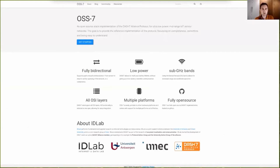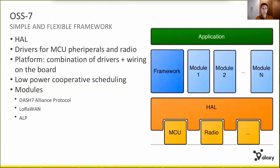The open source implementation of the spec is hosted on GitHub and licensed under the Apache 2 license. The goal is to be a reference implementation of the spec and portable to multiple platforms. It has a simple architecture with a non-preemptive scheduler, a hardware abstraction layer, and you can plug in different drivers for different microcontrollers and radios. The network stacks are implemented as modules.